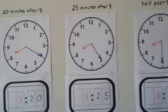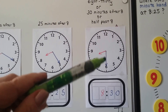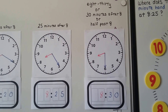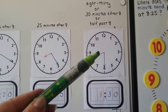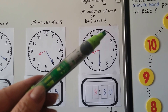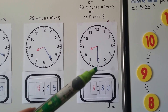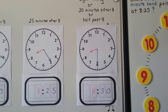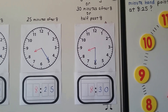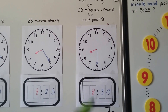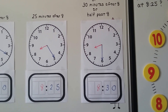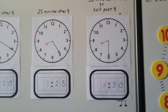When the minute hand is pointing to the six and the hour hand is between the eight and nine, it's 8:30. We use the smaller number it just passed — it hasn't gotten to nine yet, so it's the eight. We could also say it's thirty minutes after eight, or thirty minutes past eight. Some people even say it's half past eight, because 30 and 30 makes 60 — and that's an hour, 60 minutes. So if it's 30 minutes past eight, it's a half hour past eight.